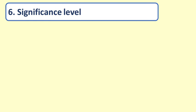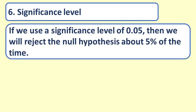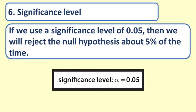Question 6. Significance level. If we use the significance level of 0.05, then we will reject the null hypothesis about 5% of the time.